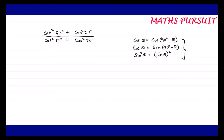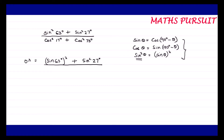Now, sin²63° + sin²27° upon cos²17° + cos²73°. I can write sin²63° as (sin 63°)² and cos²17° as (cos 17°)², following the same logic that sin²θ can be written as (sin θ)².